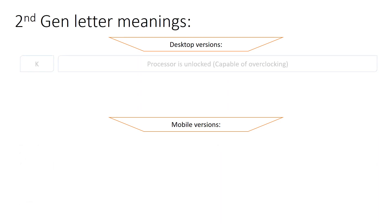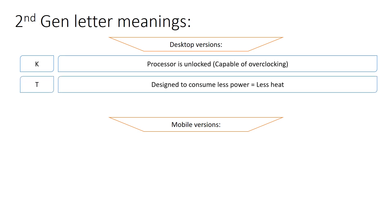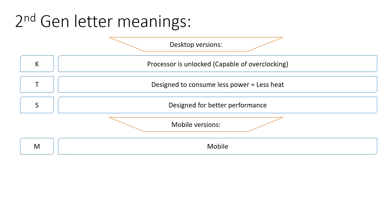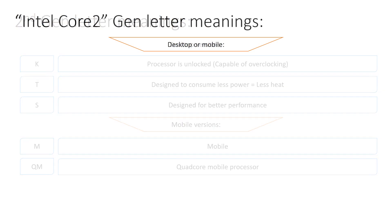For the 2nd generation desktop: K is again unlocked, T means less power and less heat, and S is designed for better performance. For mobile: M stands for mobile and QM stands for quad core mobile processor.